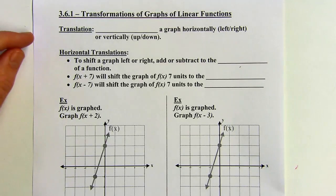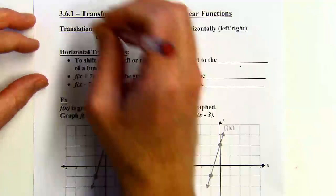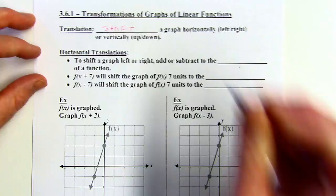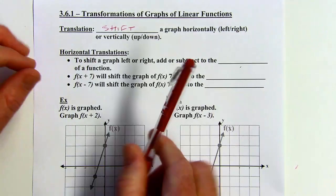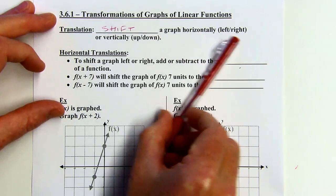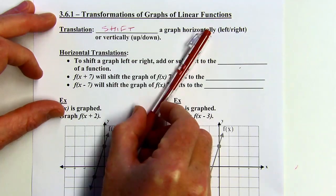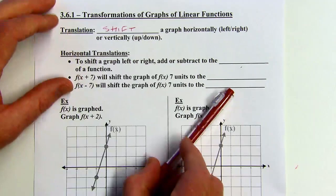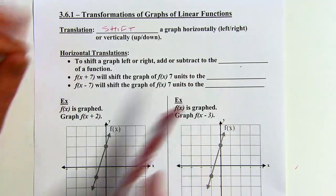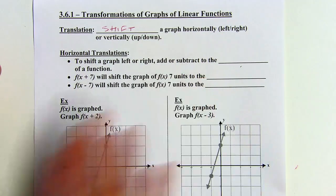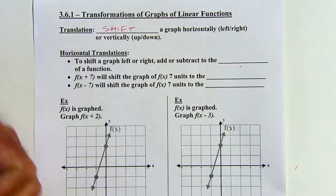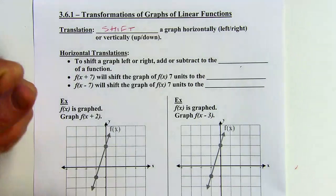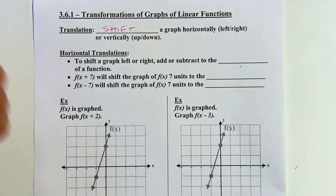We're going to start with something called a translation. That's when we shift a graph horizontally, which means left and right — so if I've got a line, I'm shifting left and right. Or you can shift it up and down. So it's just moving something left, right, up or down, but not turning it or shrinking it or anything like that.